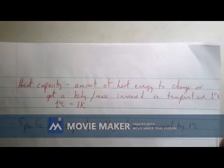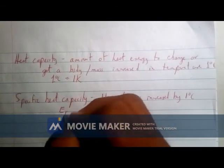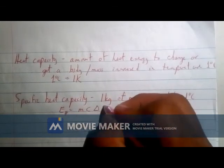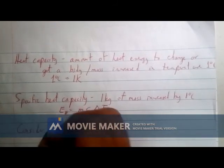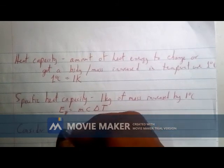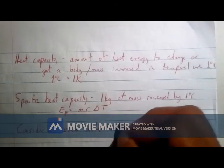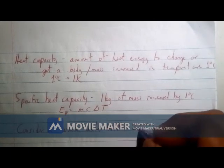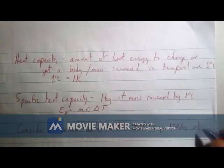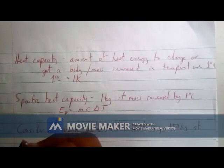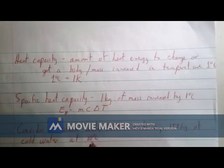Let's work through an example. The equation for energy here is: energy equals mass times specific heat capacity times change in temperature. Consider a warm water bottle containing 150 kilograms of cold water at 10 degrees Celsius.